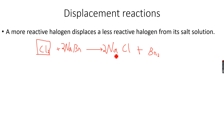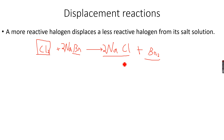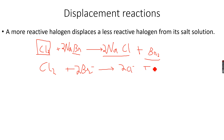Cl₂ is more reactive than Br₂ — chlorine is more reactive than bromine — which means chlorine is likely to oxidize the bromide ion because it wants to get reduced itself. That's why we get NaCl and Br₂. The bromine is oxidized from Br⁻ to Br₂, and the chlorine is reduced from Cl₂ to Cl⁻. The ionic equation for this reaction is: Cl₂ + 2Br⁻ → 2Cl⁻ + Br₂.